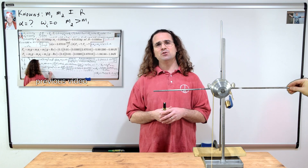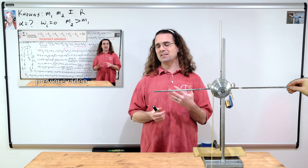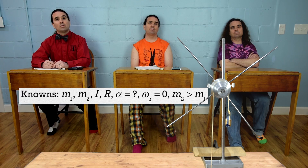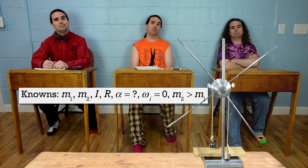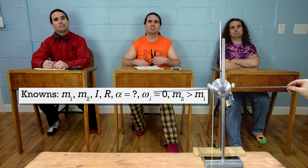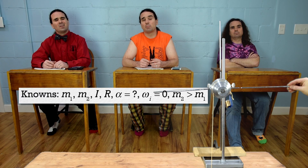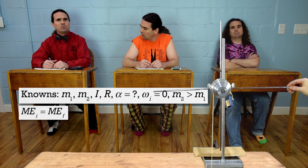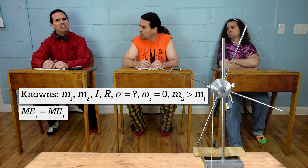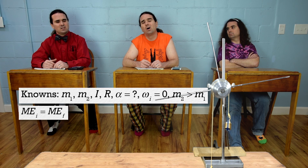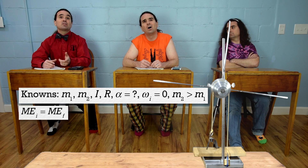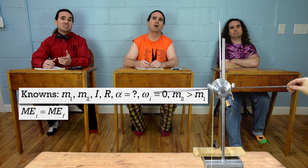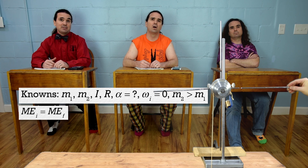First off, Bobby, how do you know mechanical energy is conserved in this situation? Well, there is no force applied and no force of friction, so no forces are adding or removing energy from the system. Therefore, mechanical energy is conserved. Actually, there is a force of friction between the string and the pulley, otherwise the pulley would not rotate. But the force of friction is internal to the pulley-string-and-two-mass system, so it does not add or remove energy from the system.